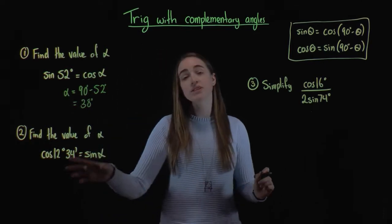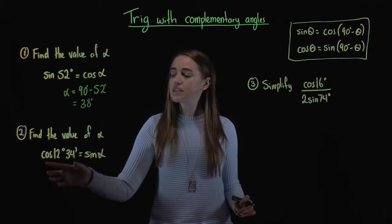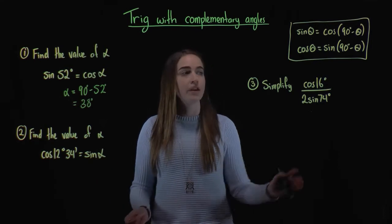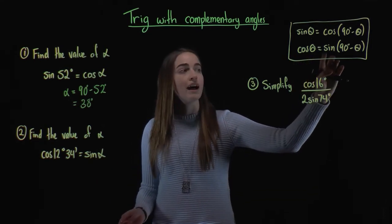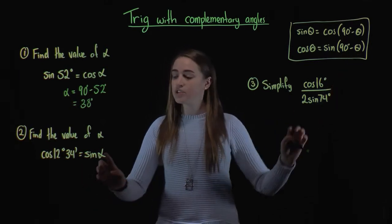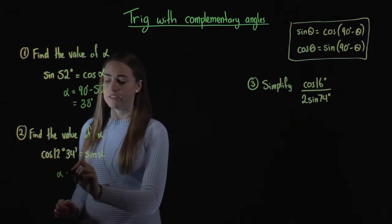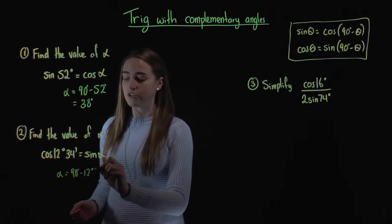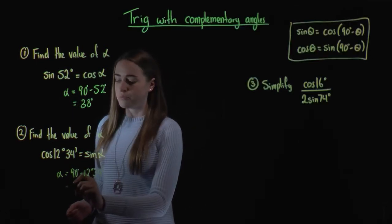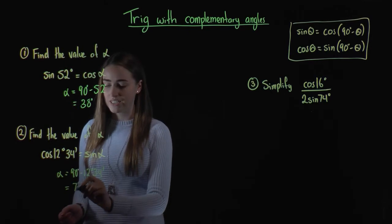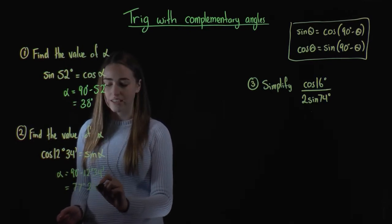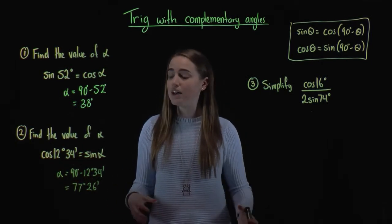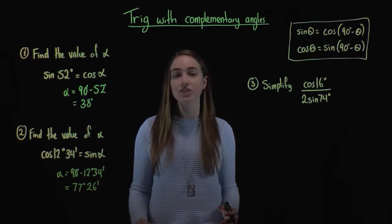Our second example is similar but we're using the other relationship. We're starting with cos of 12 degrees and 34 minutes, and we want to instead write that in terms of sine. If we've got cos of an angle, we can write it as sine of 90 minus that angle. So our alpha is going to be 90 degrees minus 12 degrees and 34 minutes, which gives us 77 degrees and 26 minutes. So cos 12°34' and sine 77°26' would give the same answer on your calculator.